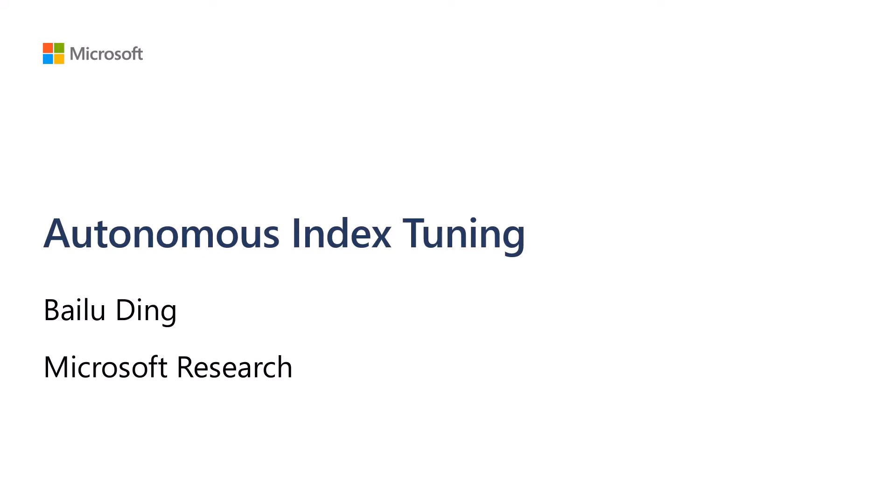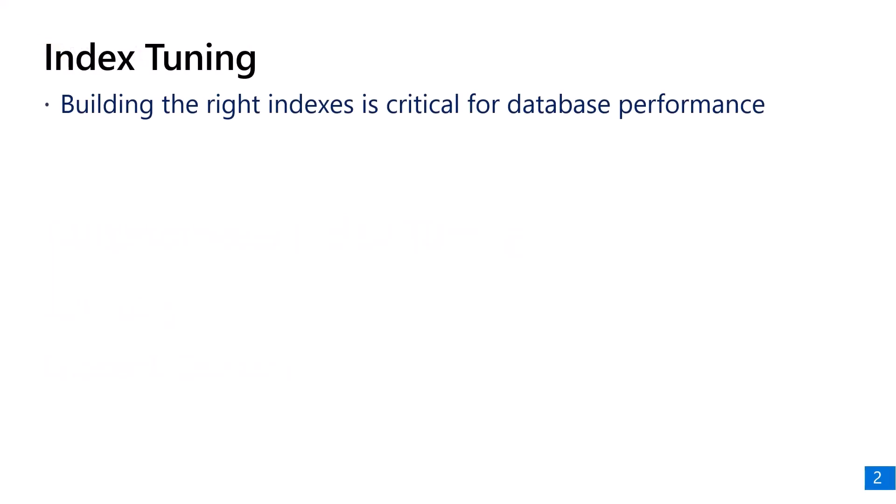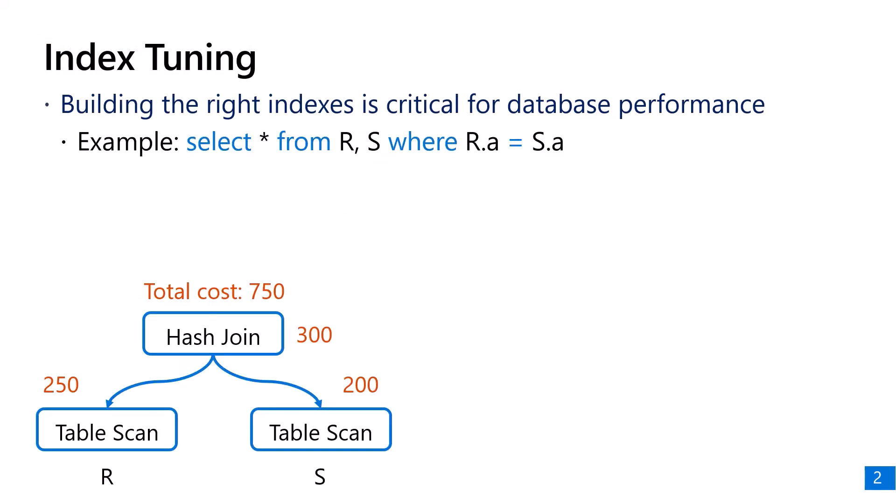Building the right indices is crucial for database performance. For example, if we join two tables R and S without indices, we join table R and S with a hash join after scanning the two tables.